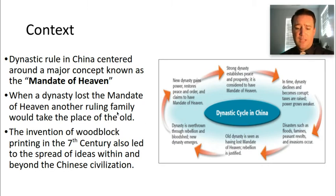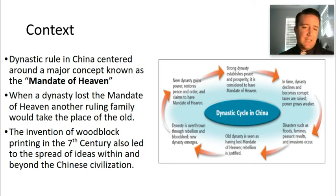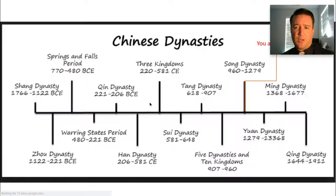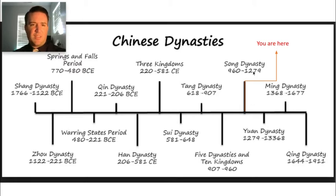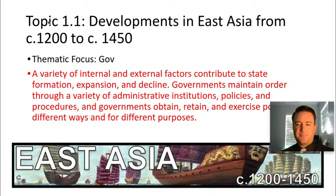The Mandate of Heaven is a big part of Chinese dynastic rule. Also important to note is that the invention of woodblock printing came around in the seventh century, which would lead to the widespread sharing of ideas throughout East Asia centered around Chinese civilization. We're talking about the Chinese dynastic cycle — here's a brief overview of the timeline. We're starting with the Song dynasty, which ruled from 960 to 1279, beginning roughly around 1200.